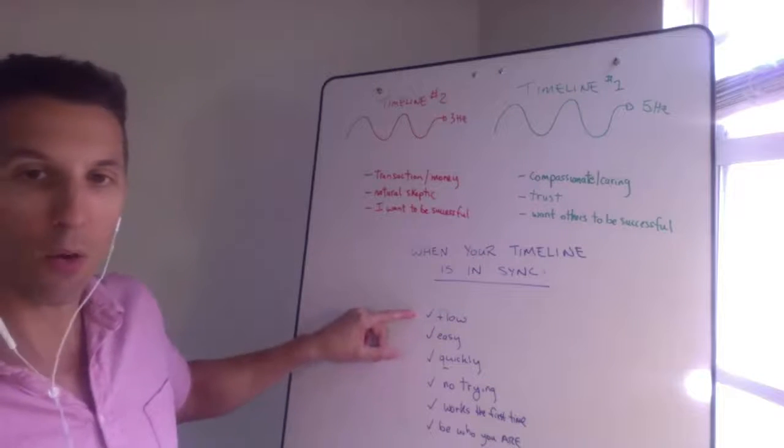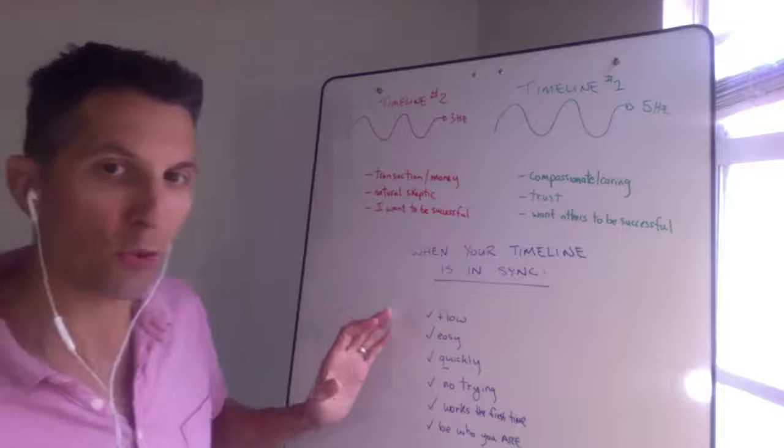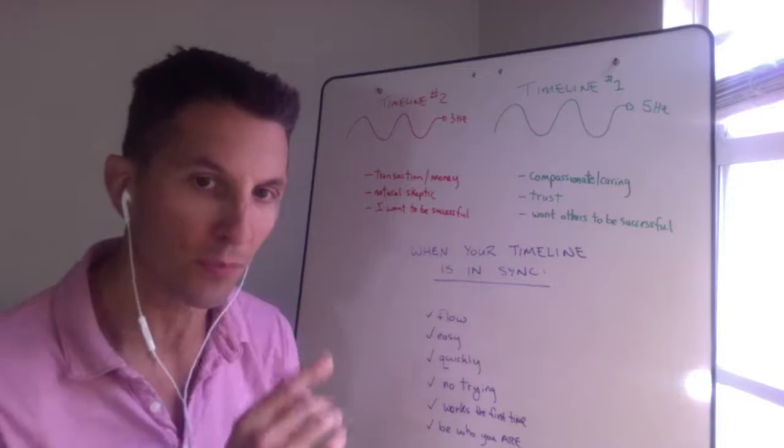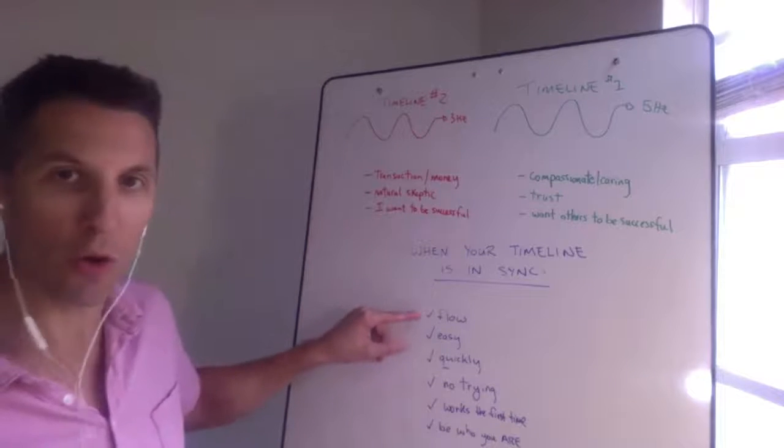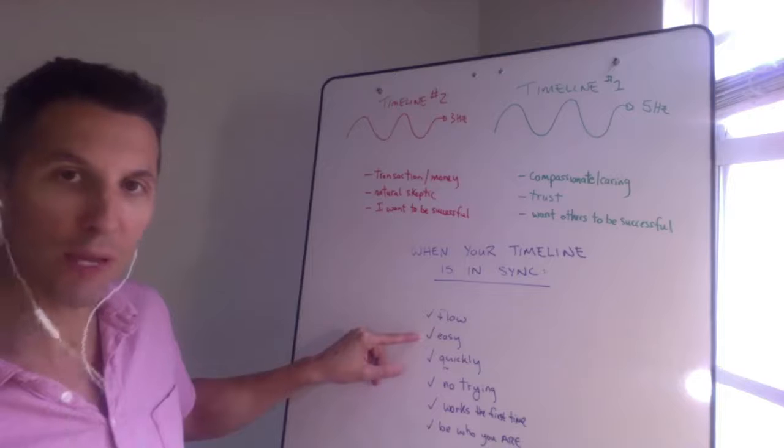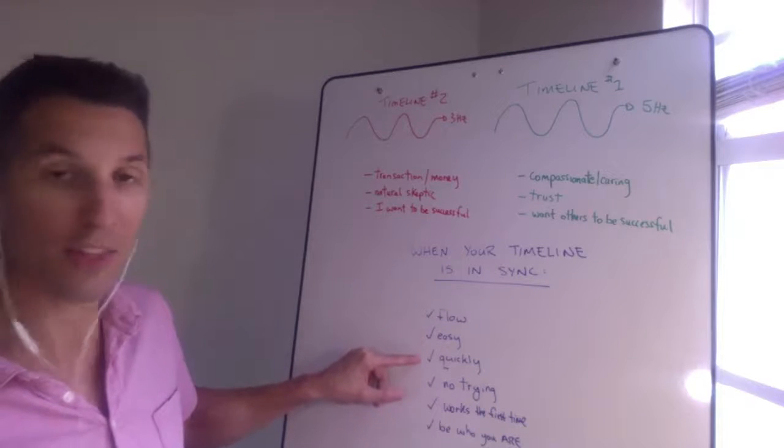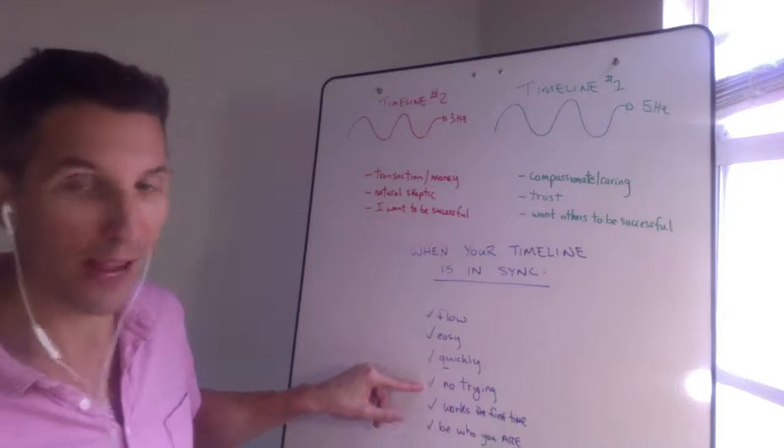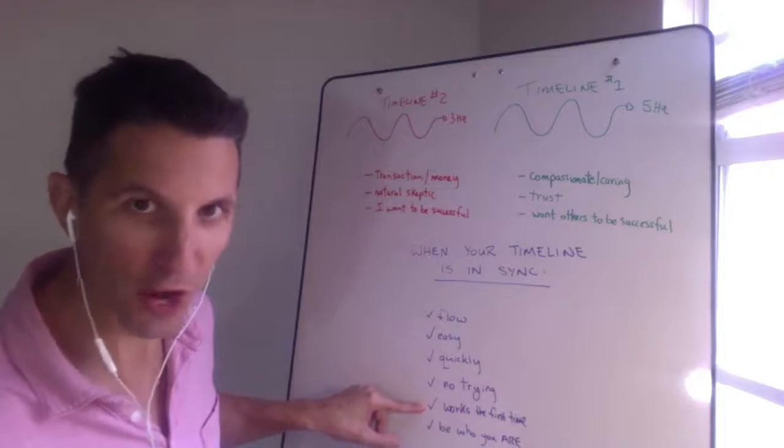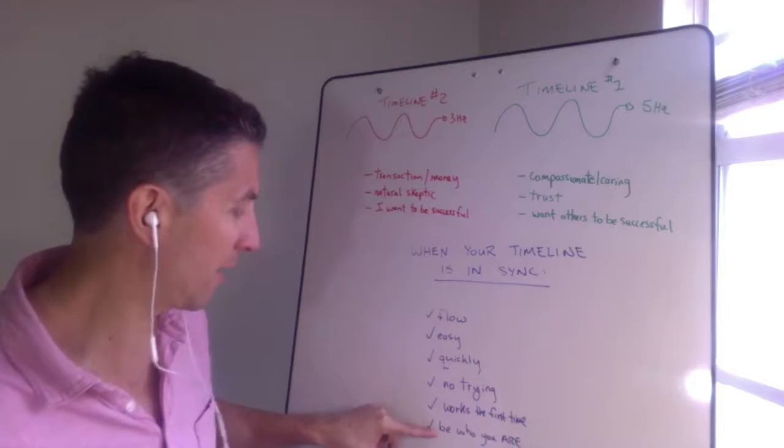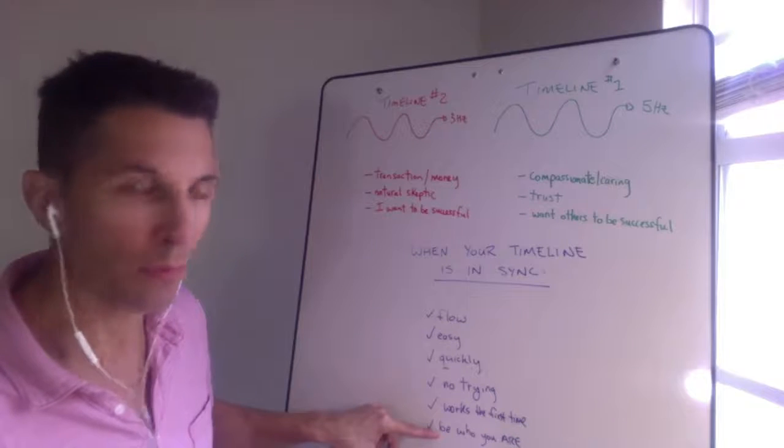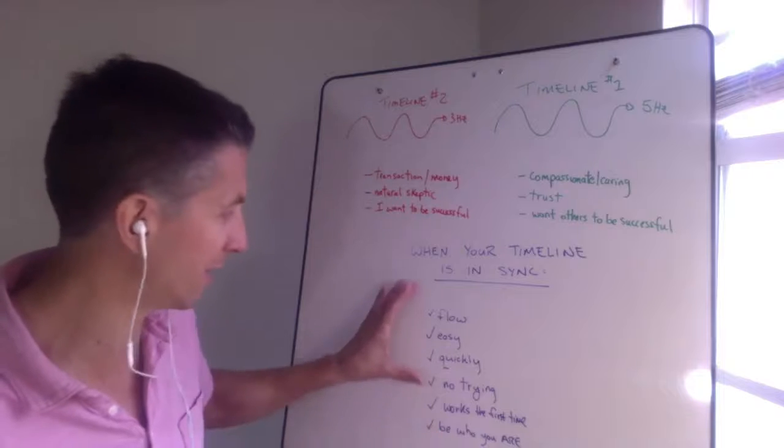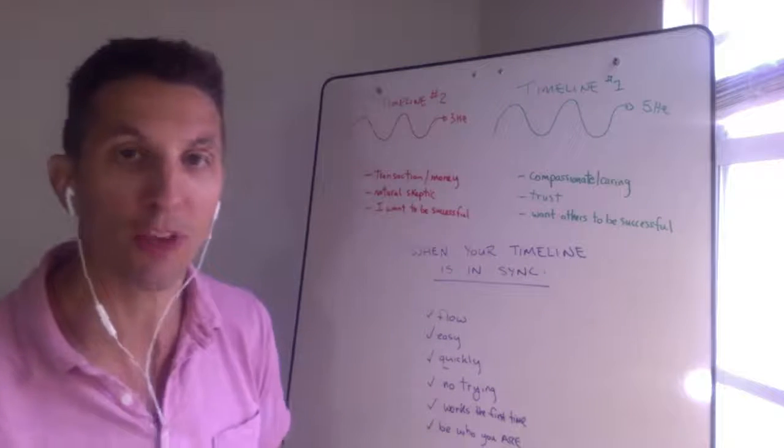And then when we start working together, all these things happen. Now let me just give you another example. So when I was working with construction companies, I'd work with four in one year. Guess what would happen? It wasn't in the flow, we had to keep scheduling meetings over and over again. It wasn't easy, things didn't happen quickly, it was very slow. I had to try a lot, I had to really work it. It did not work the first time, we had multiple attempts. And I was being who I was but I also noticed that it wasn't easy for us to get to the point where I could be who I am.